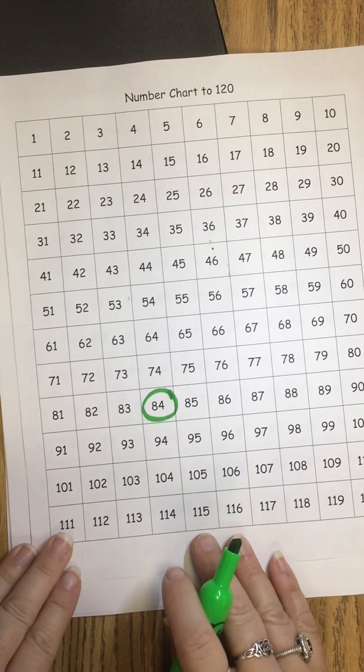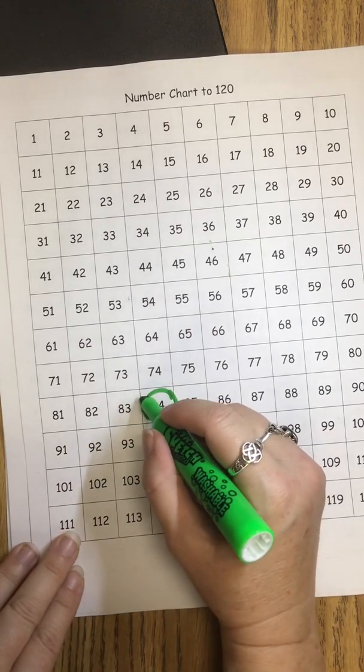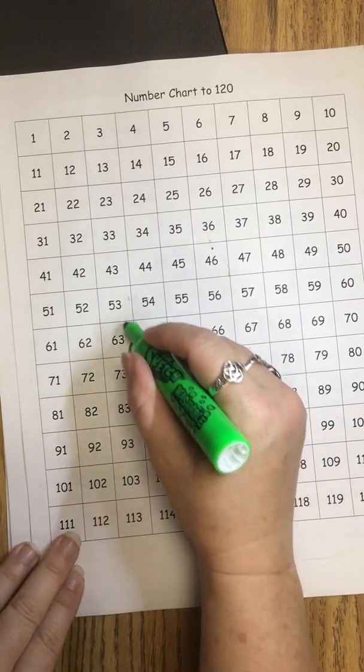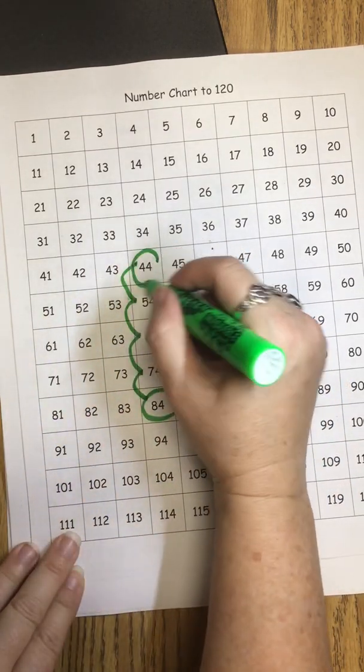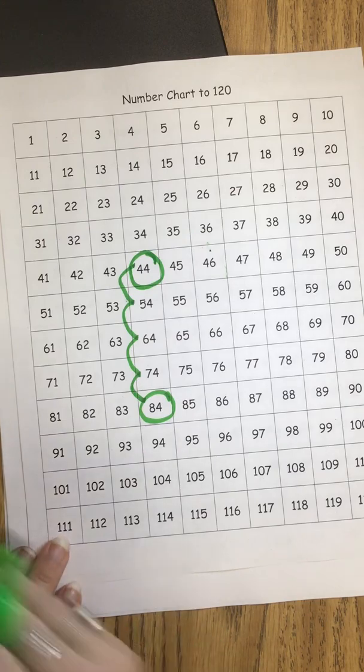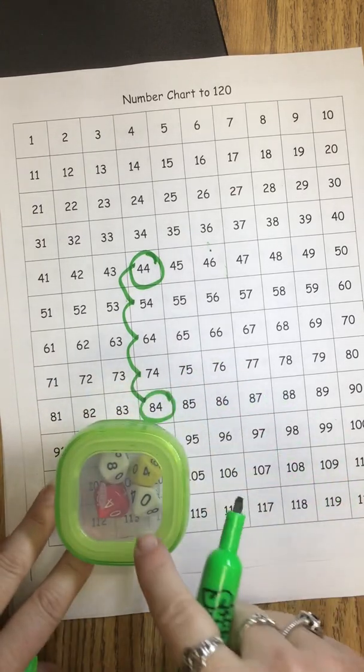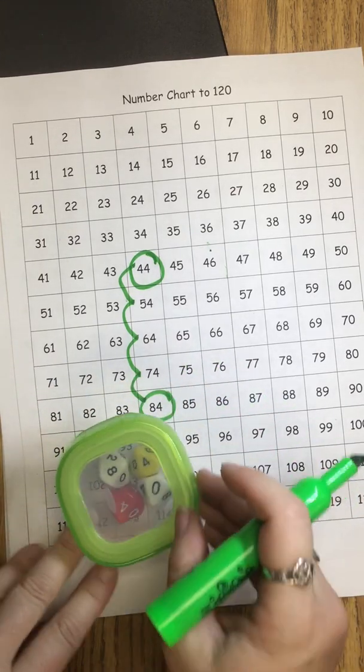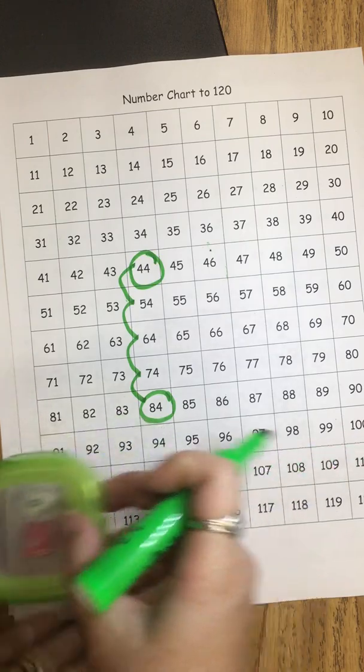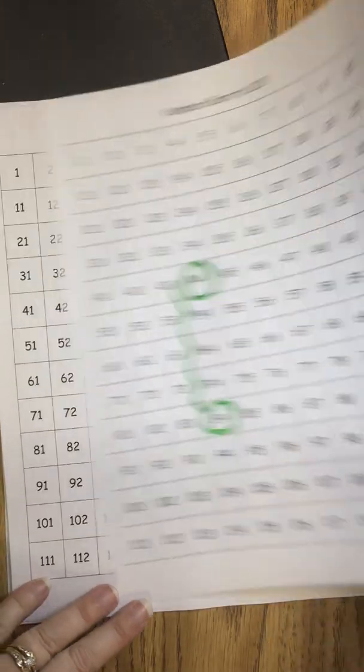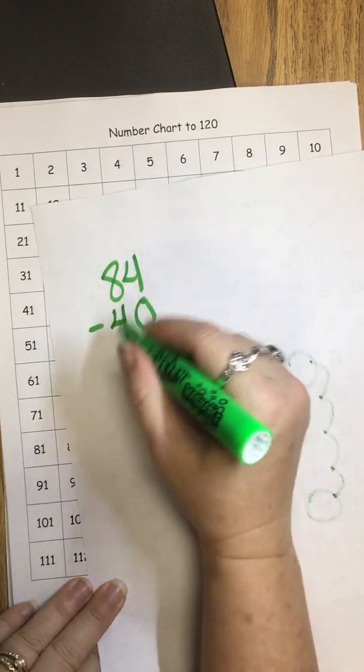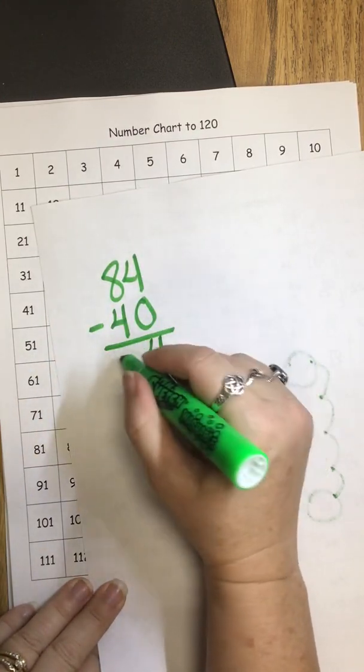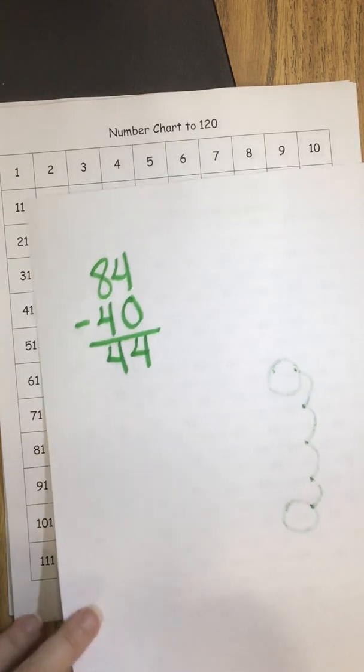So 84 subtract 4 tens. 10, 20, 30, 40. I'm doing my 10 jumps, going straight back. I would land on 44. This time, I have 0 ones. So I'm not subtracting any ones. My problem would be 84 minus 40. I subtracted 0 ones. So I landed at 44.